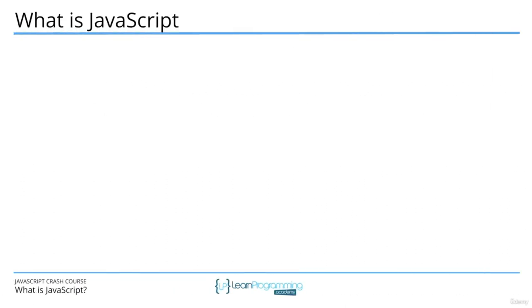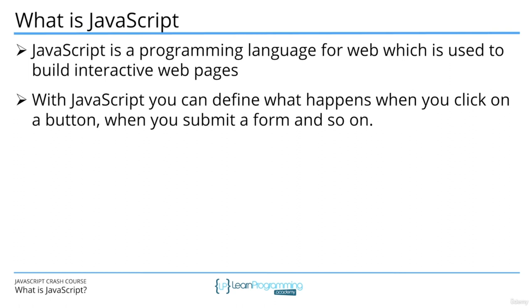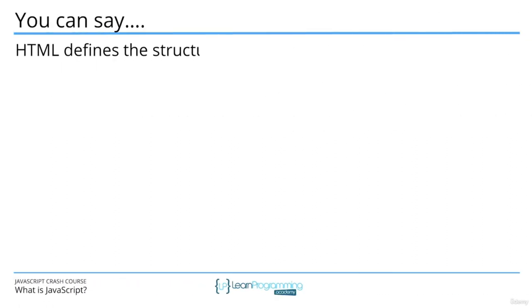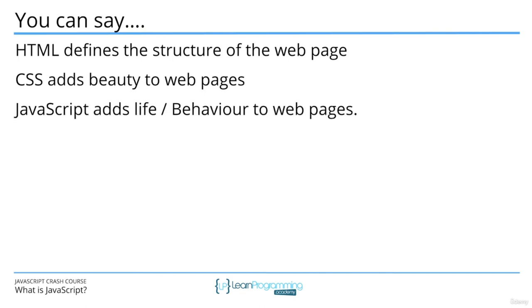JavaScript is a programming language for the web, used to build interactive web pages. With JavaScript you can define what happens when you click a button or submit a form. You can say that HTML defines the structure, CSS adds beauty, and JavaScript adds life or behavior to web pages. Code written in JavaScript is known as scripts.